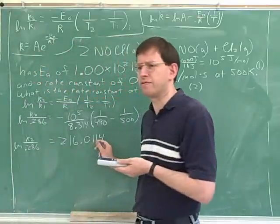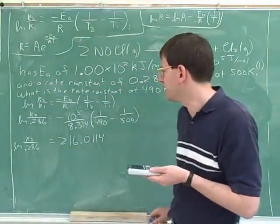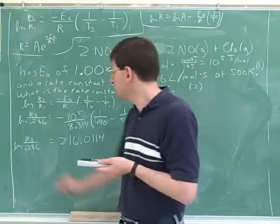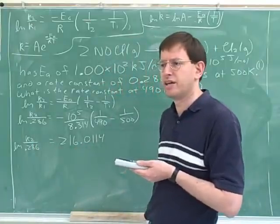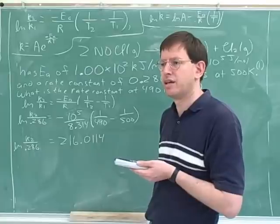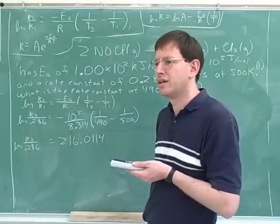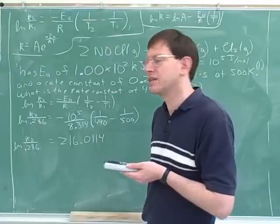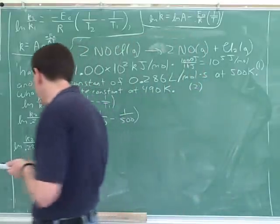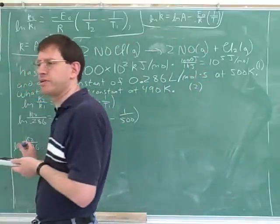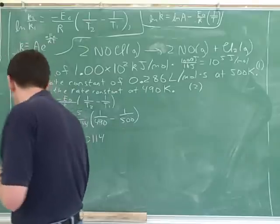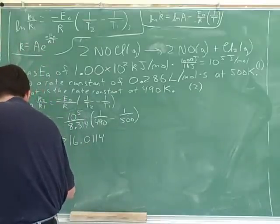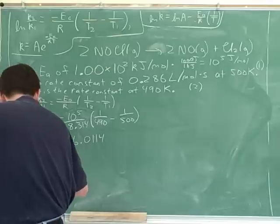This is what I've gotten so far on the right-hand side. What can we do to simplify the left-hand side? We can use the logarithm rules we learned about before. The log of a quotient is the difference of the logs.